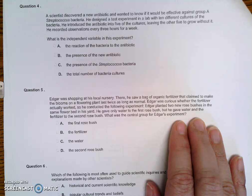What is the independent variable in this experiment? And that answer is B, the presence of the new antibiotic. So in a scientific experiment, the independent or controlled variable is the factor that is manipulated by the person performing the experiment. So in this case, the scientist controlled whether there was any antibiotic in each of the cultures.